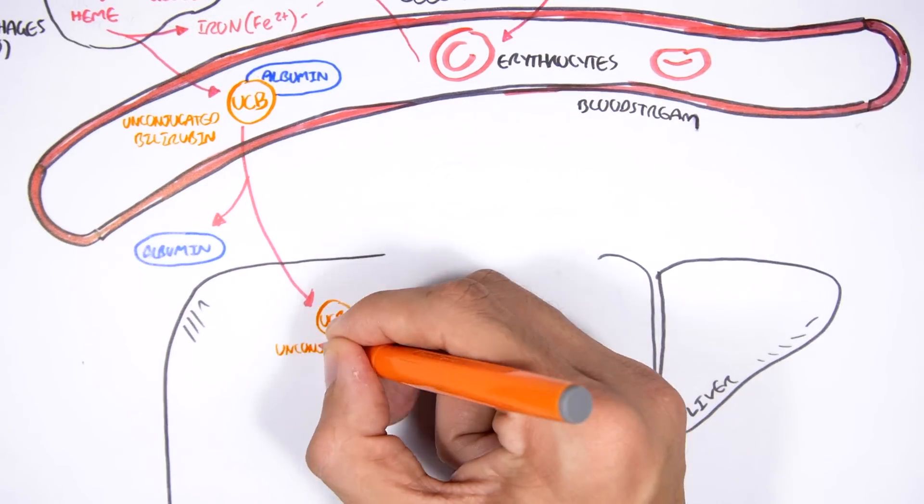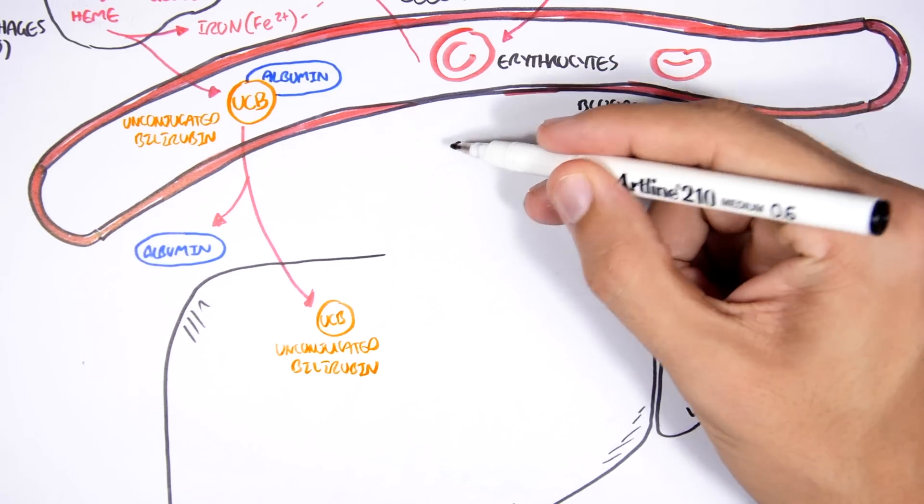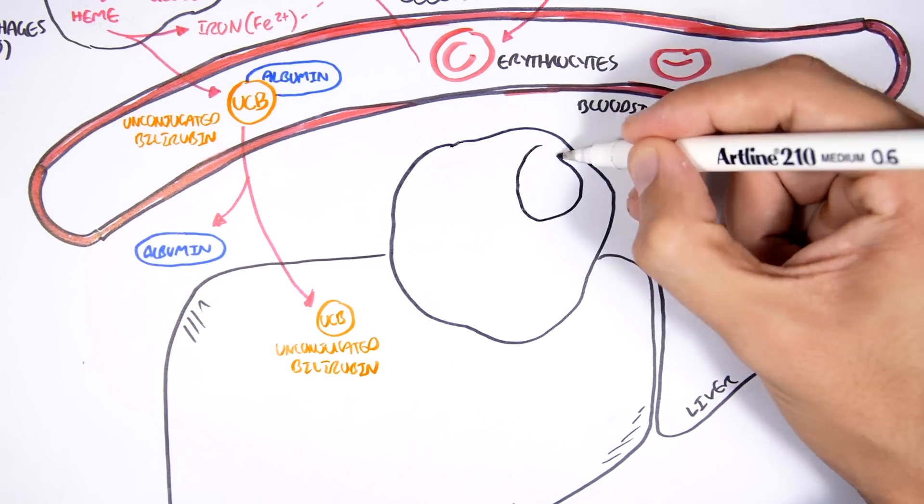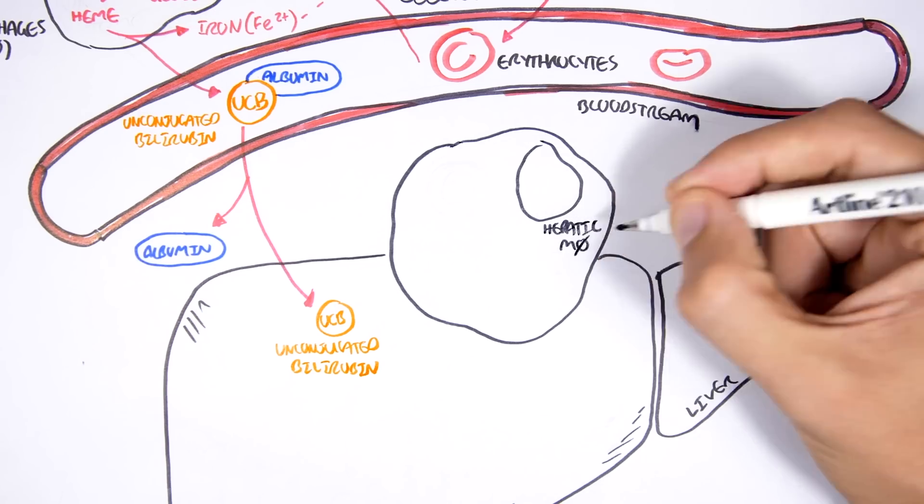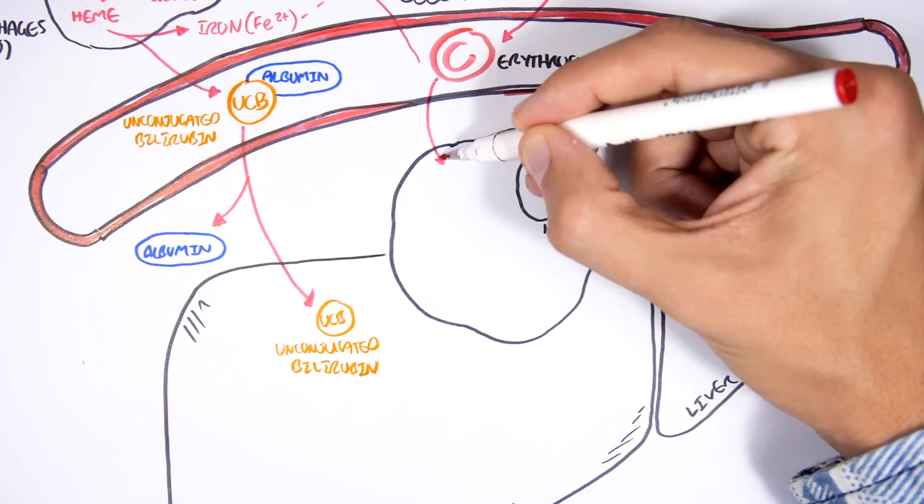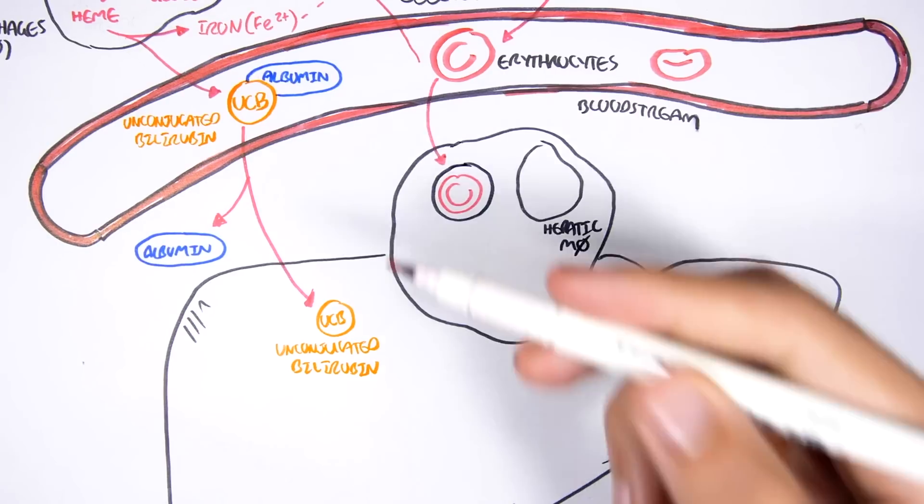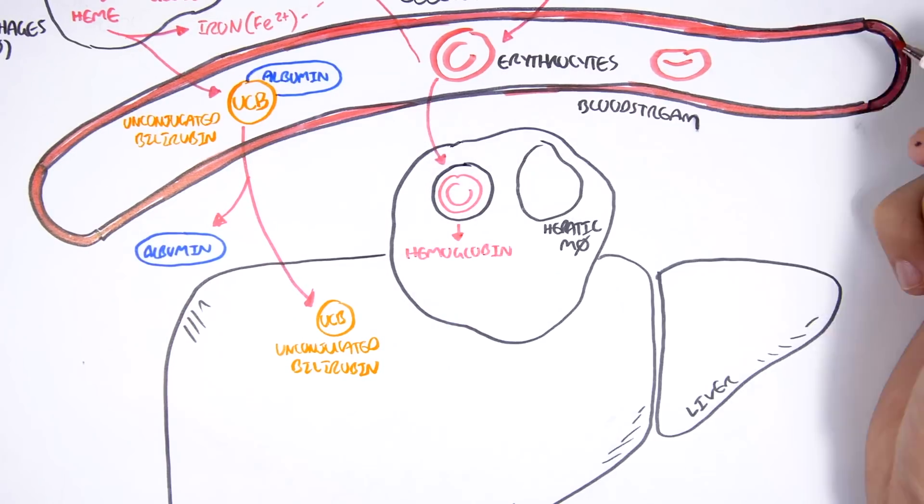Now interestingly enough, the liver has its own macrophages known as Kupffer cells, which will also break down old or damaged erythrocytes. So these erythrocytes will be broken down again to globin and heme.